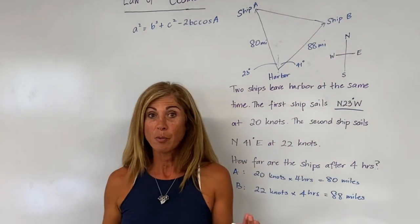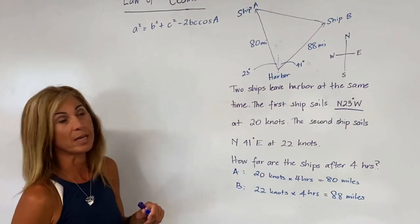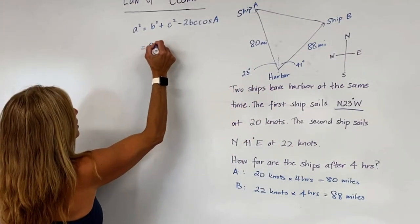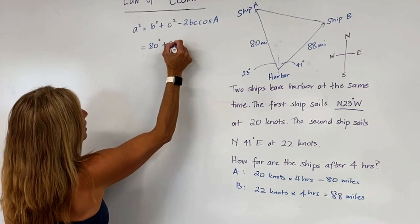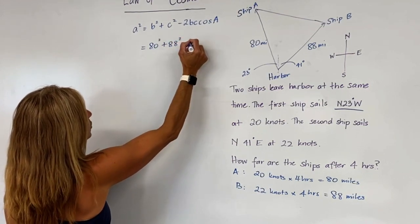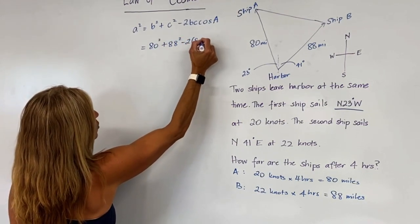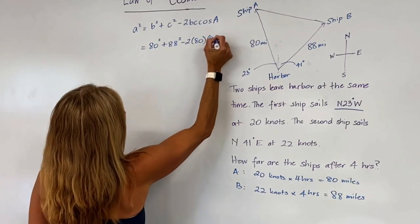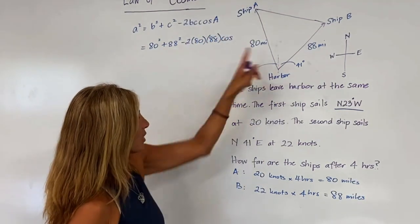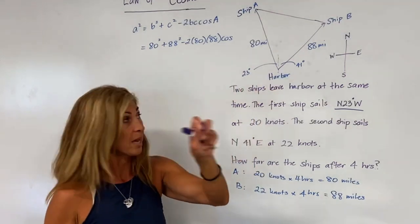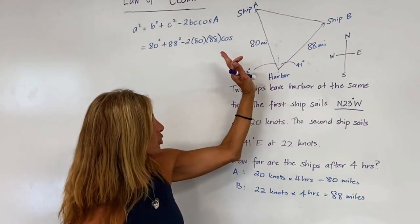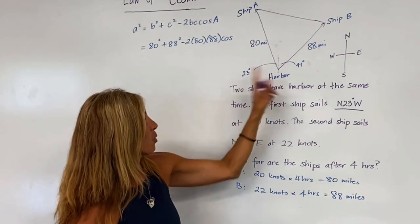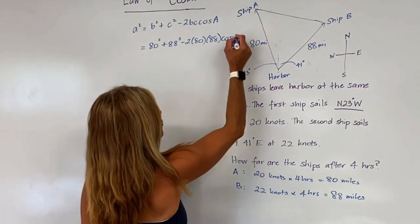So we have all the pieces we need to use our law of cosines. We have 80 and 88: 80 squared plus 88 squared minus 2 times the quantity 80 times 88, times cosine of the angle in between. Now recall from the diagram we have 23 degrees and 41 degrees, which gives us a total of 64 degrees.